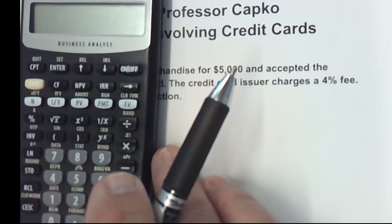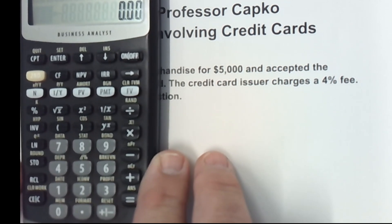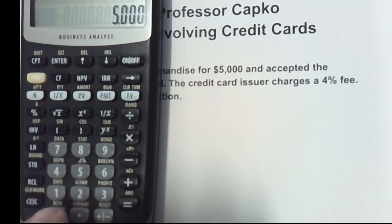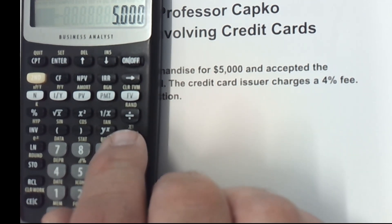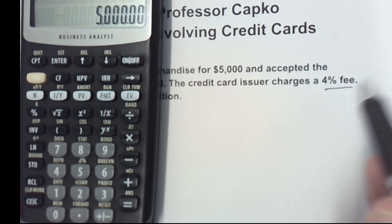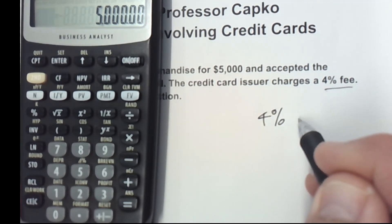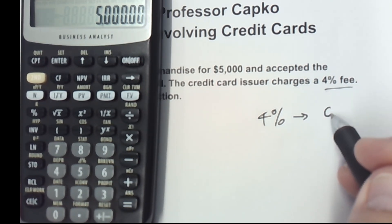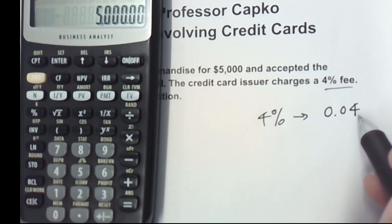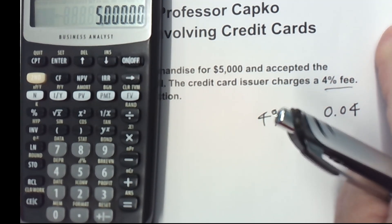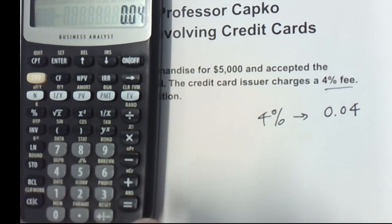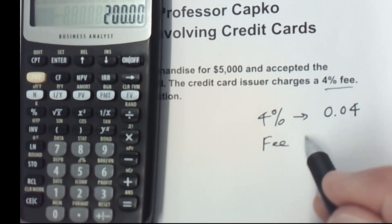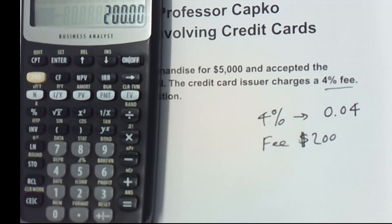I'm going to use my Texas Instruments BA2 Plus calculator for that. Our sales is $5,000, and I'm going to multiply it by 4%. Remember, if we've got 4% we need to convert that to a decimal by moving the decimal place over two spaces — 0.04. So we're going to multiply $5,000 times 0.04, and that's going to tell us that our fee is $200.